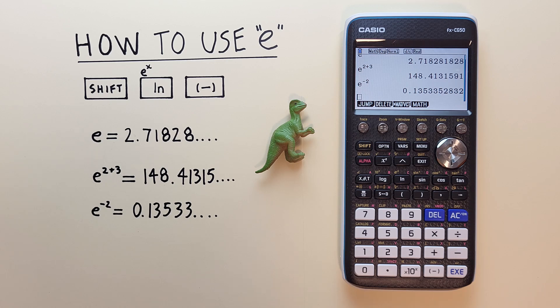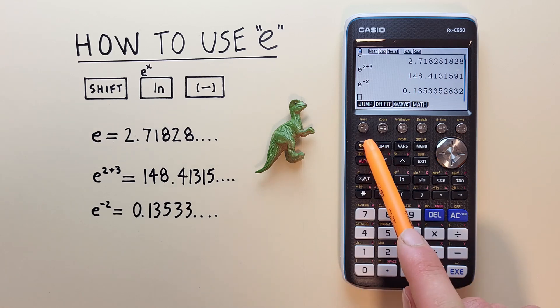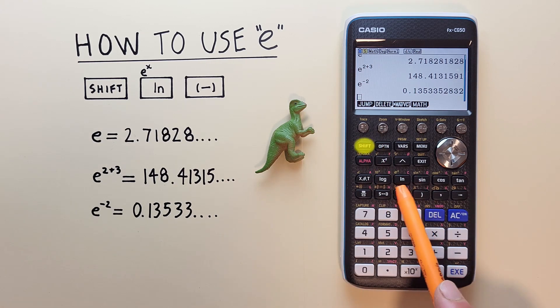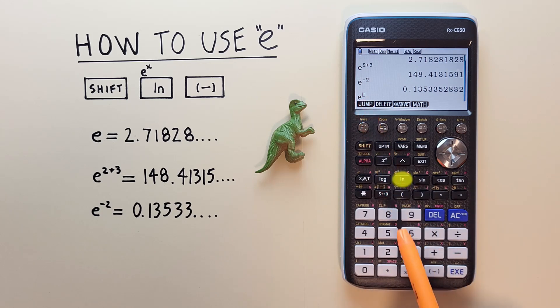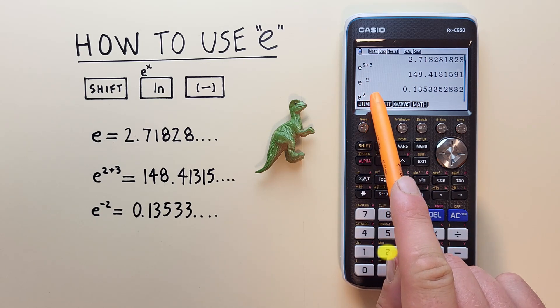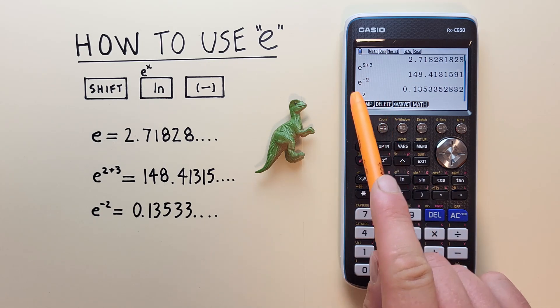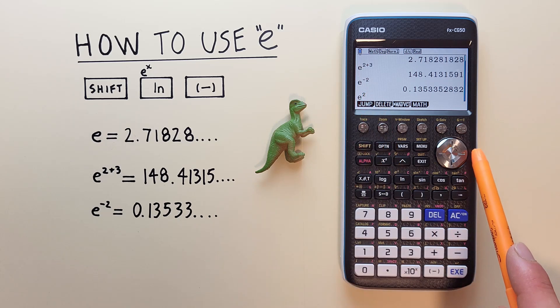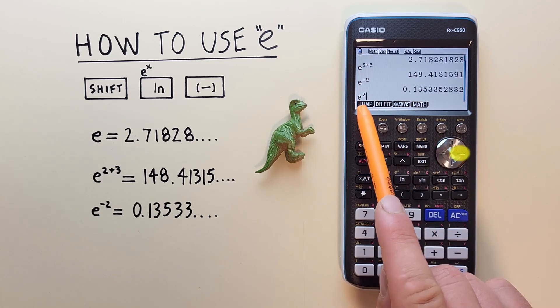What if we're using e as a part of a larger formula or equation? Like for example, e to the power of 2 plus 1. Well, to do this, again, we can enter our shift ln, and then our 2, which is our power. But then we need to bring our cursor down out of the exponent spot. So to do that, we use the right arrow key. There we go.